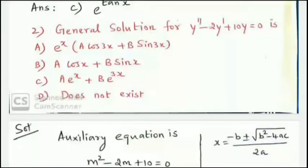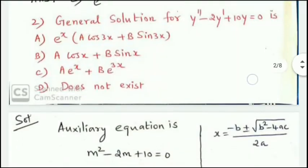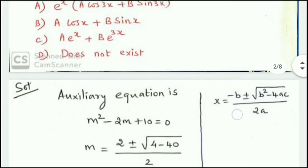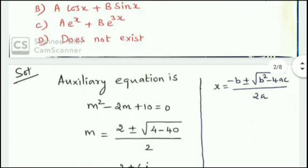Next question: find the general solution of y'' - 2y' + 10y = 0. We form the auxiliary equation: m² - 2m + 10 = 0. This cannot be factorized directly.